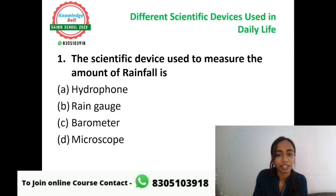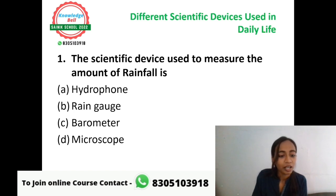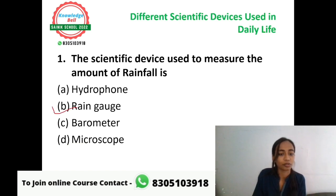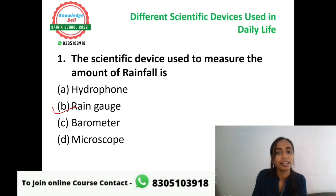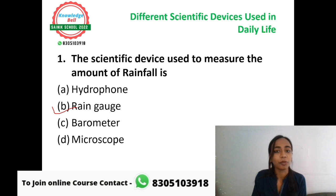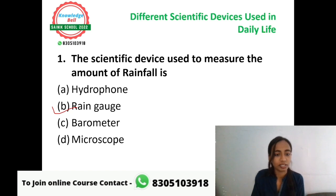The first question: the scientific device used to measure the amount of rainfall — A: hydrophone, B: rain gauge, C: barometer, or D: microscope. The correct answer is B, rain gauge. Rain gauge is the device we use to measure the amount of rainfall — to get the numerical quantity of how much rainfall has occurred.